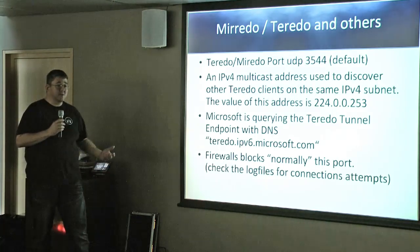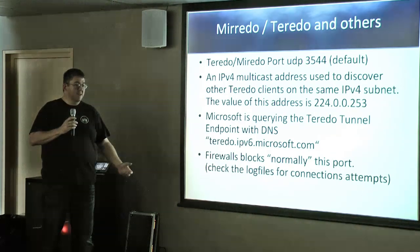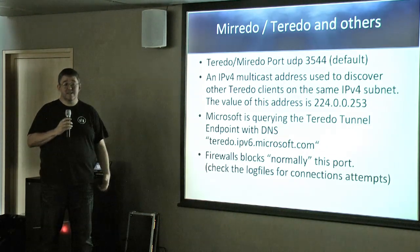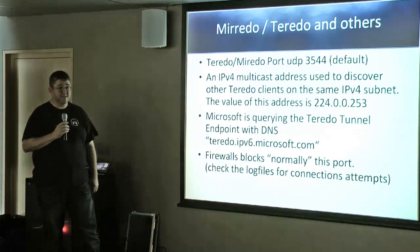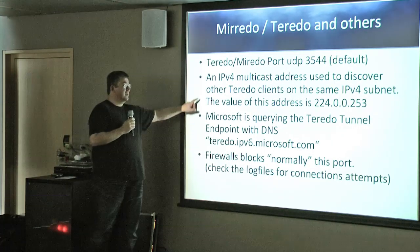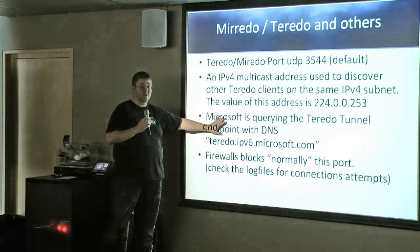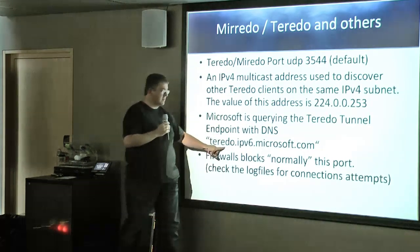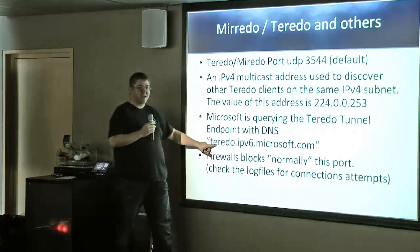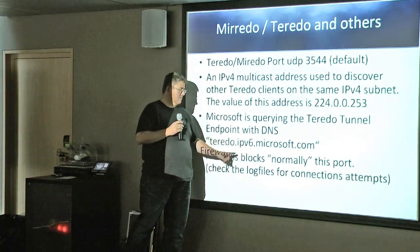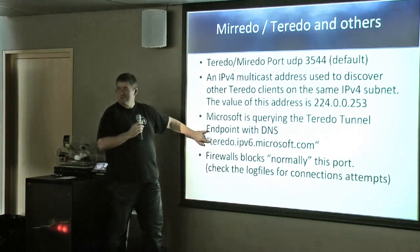Windows 7 has IPv6 and Teredo tunnels enabled by default. If it cannot connect over native IPv6, it sends traffic over the Teredo tunnel to Microsoft's Teredo servers and then to the IPv6 internet. When Windows starts, it tries to resolve the Teredo server name. If you can spoof that response and announce your own device as the Microsoft Teredo server, all Teredo tunnel traffic routes through you.